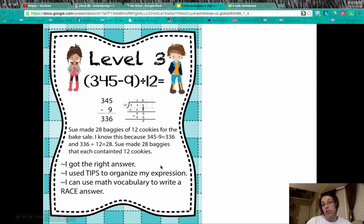So Sue made 28 baggies that each contained 12 cookies. So for a level three, we're looking for getting the right answer. You've used tips to organize, getting the expression together. And then you've used math vocabulary and written a race answer so that you've got details and you've really explained how you arrived at your answer.